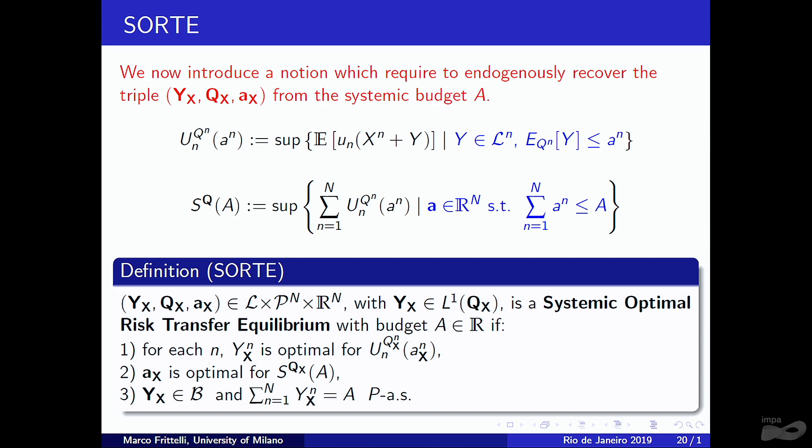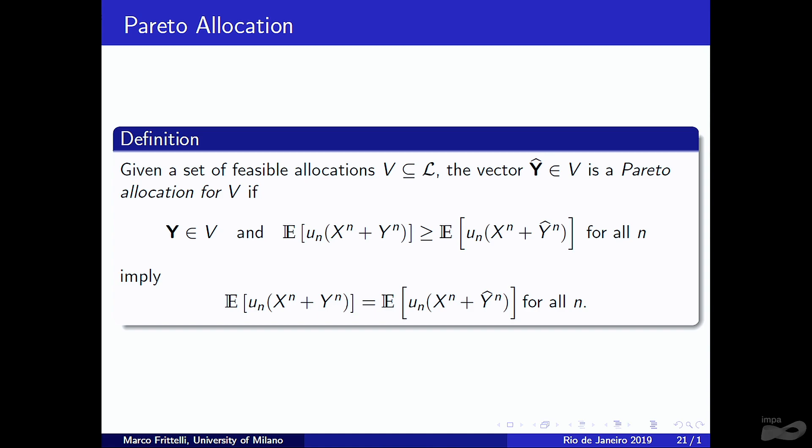We seek a triple of random allocation vector, probability vector, and constants (A in ℝⁿ) for which Yₙ is optimal for the single-agent problem, Y satisfies the clearing condition, and A is optimal for the systemic problem. Both Y and Q are unknowns. This extends Bühlmann by making A endogenous and allowing agent-specific pricing measures.